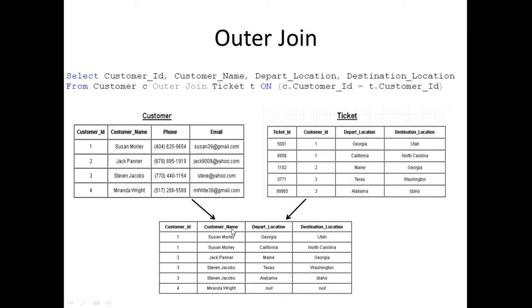We're going to have the customer ID, customer name, depart location, and destination name. All records are going to be returned within this table. The first record we're going to grab is Susan Morley. She has a customer ID of one here, as well as a customer ID of one in the ticket table, and she also has another customer ID of one in the ticket table. So there are going to be two records returned for Susan Morley.